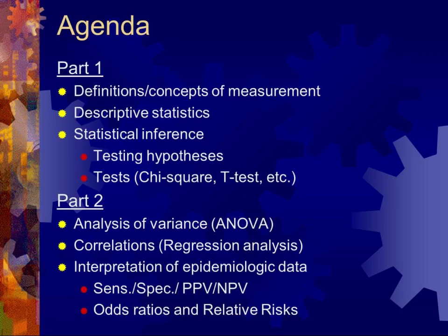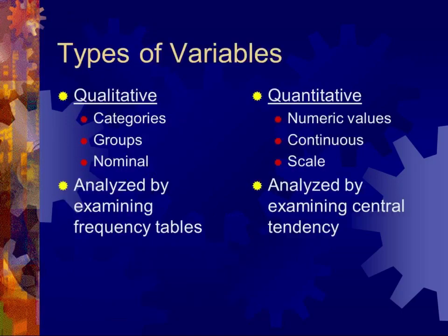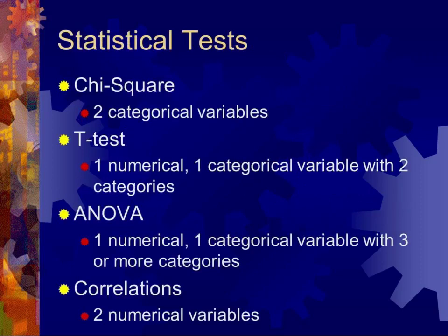And then odds ratios and relative risks. As a reminder, there are two main types of variables: qualitative variables, sometimes called categories or nominal categories, analyzed by examining frequency tables; and quantitative variables, which are numeric, continuous, or scale variables, analyzed by examining central tendencies. Tonight we'll briefly review chi-square and t-tests, then spend the majority of our time on ANOVA, correlations, and epidemiological concepts.